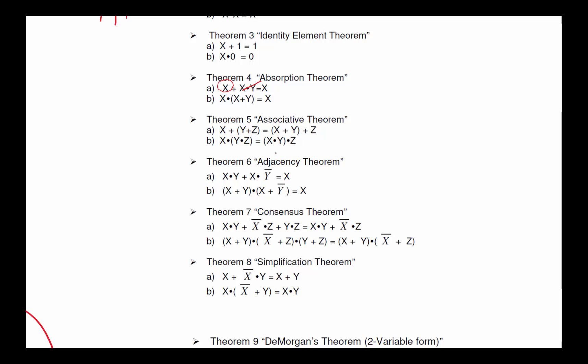This adjacency theorem we use a lot for minimization, which basically says if I've got a variable X and that is ANDed with Y, ORed with X ANDed with Y', I really don't need Y. Because X... because Y in, regardless of what happens, X ANDed with zero, whether Y is one or zero it doesn't matter. Therefore that whole thing really relies on X. The answer is X.